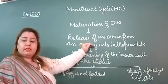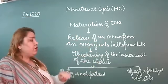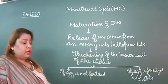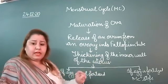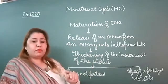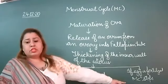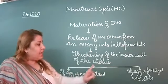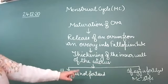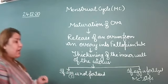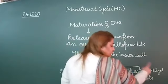When the egg or ovum is released into the fallopian tube and comes into the uterus, if sperm arrives and the egg is fertilized in the fallopian tube, then the menstrual cycle stops. The fertilized egg will develop into an embryo and then into a fetus.